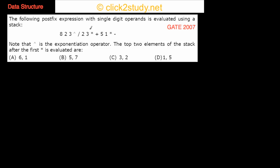The next problem involves evaluating a postfix expression with single-digit operands using a stack. This symbol is an exponentiation operator, and we need to find the top two elements of the stack after the first asterisk (multiplication) is evaluated. The first multiplication is here and the second multiplication is here.